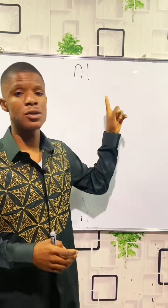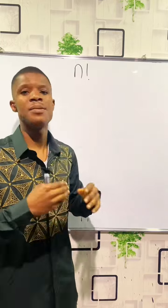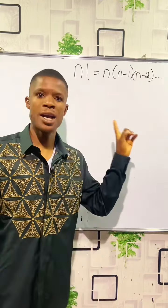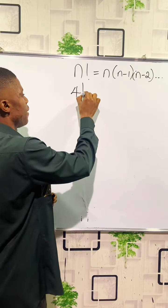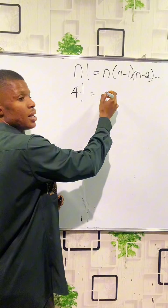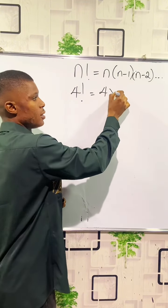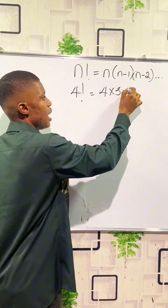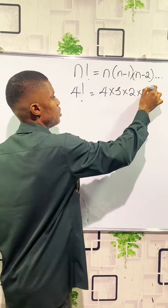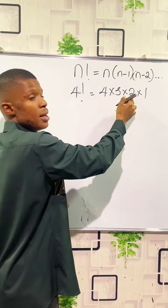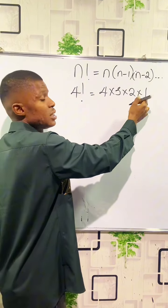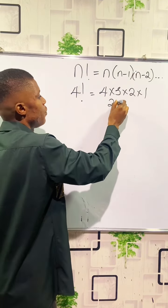What is a factorial? A factorial is the product of n times all the integers that come before it, down to one. So when we have 4 factorial, it's the same thing as 4 times 3 times 2 times 1. Four times 3 is 12, 12 times 2 is 24, 24 times 1 is 24.